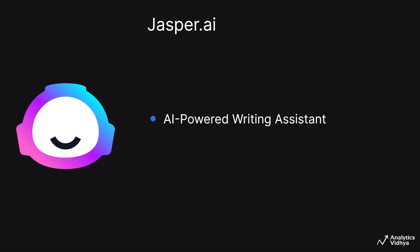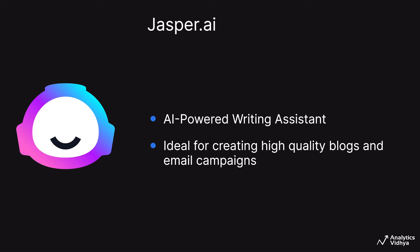The next one is jasper.ai, an AI writing assistant powered by LLMs. With jasper.ai, you can create high quality content for blogs and email campaigns instantaneously. Earlier, it would have taken nearly two weeks of effort to write a high quality blog, then editing it and seeing whether it is relevant or not. But in today's world with LLMs, it hardly takes a few seconds to write a high quality blog.